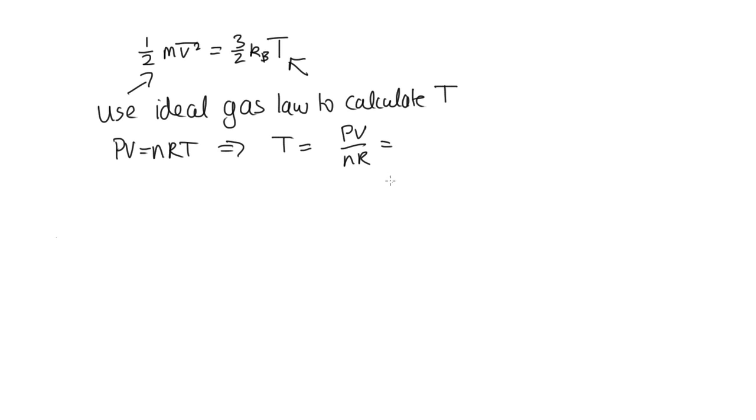And we're actually given all of these values, so we just need to substitute them in. Now, P we're given as 8 atmospheres. In this equation, we need it in Pascals. So that's 8 times 1.01 times 10 to the 5. That will convert this 8 from atmospheres to Pascals.